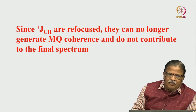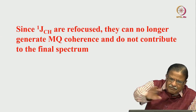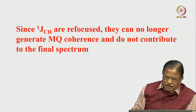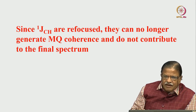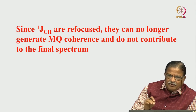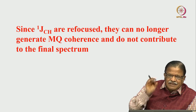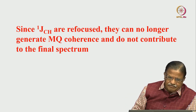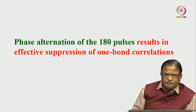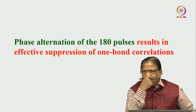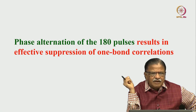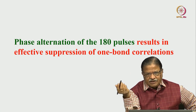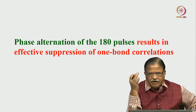Since 1JCH are refocused, they no longer generate multiple quantum coherences and do not contribute to the final spectrum. We suppress one-bond coupling which does not contribute to the spectrum by using filters, and there are varieties of such filters. Another approach is phase alternation of the 180-degree pulse, which is another way to achieve effective suppression of one-bond correlations.